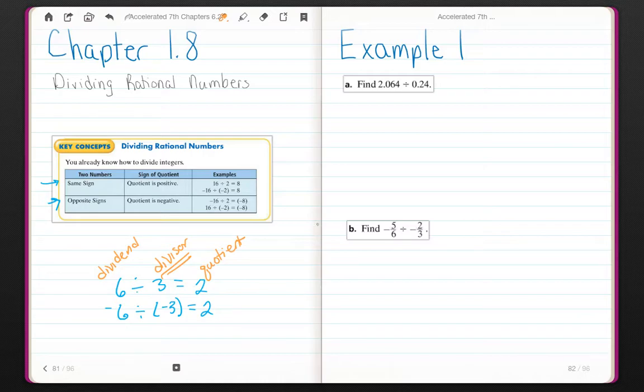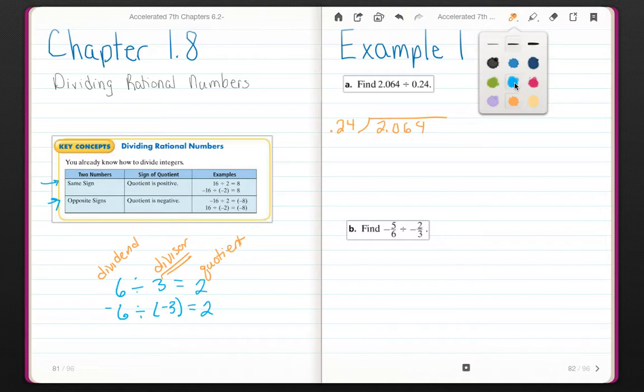Let's start with example one. Find 2.064 divided by 0.24. I have 2.064 divided by 0.24. When we divide by a decimal, we never want the divisor, which is this number here, to be a decimal. So I'm going to move the decimal two places to the right, or multiply by 100, to get a whole number of 24. I'm going to do the same thing to my dividend, because whatever I do to one number, I have to do to the other.